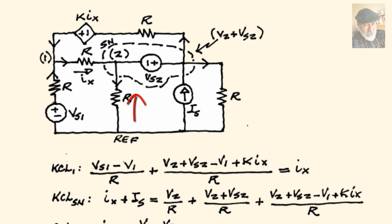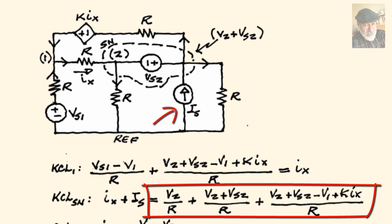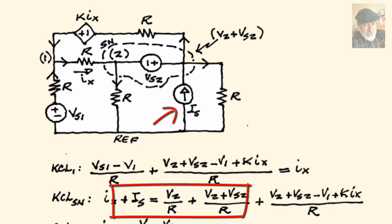Two currents arrive, IX and IS. So we have two terms on the left-hand side. And the other three currents will appear on the right-hand side of the equation. Fine. We know what to expect. Let's write them. Currents arriving. IX plus IS equals two currents.